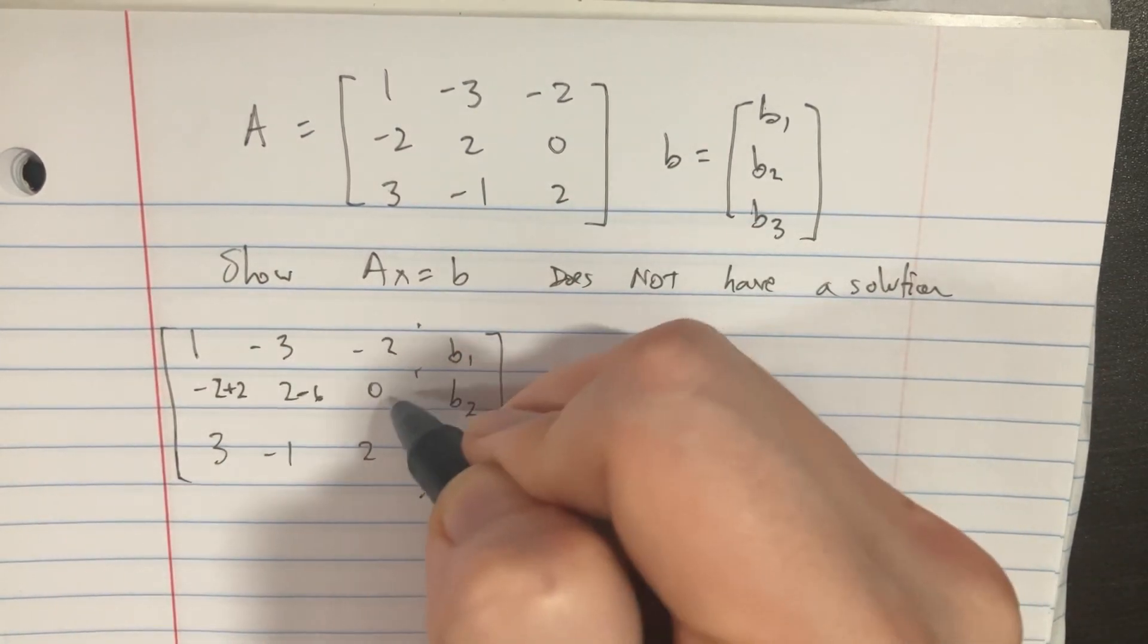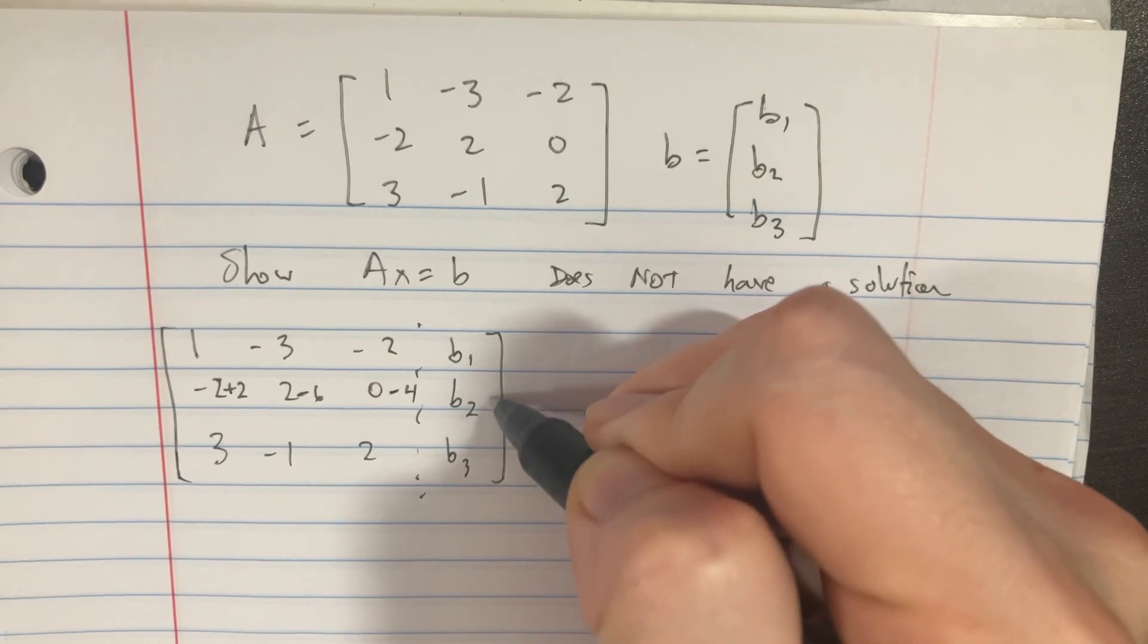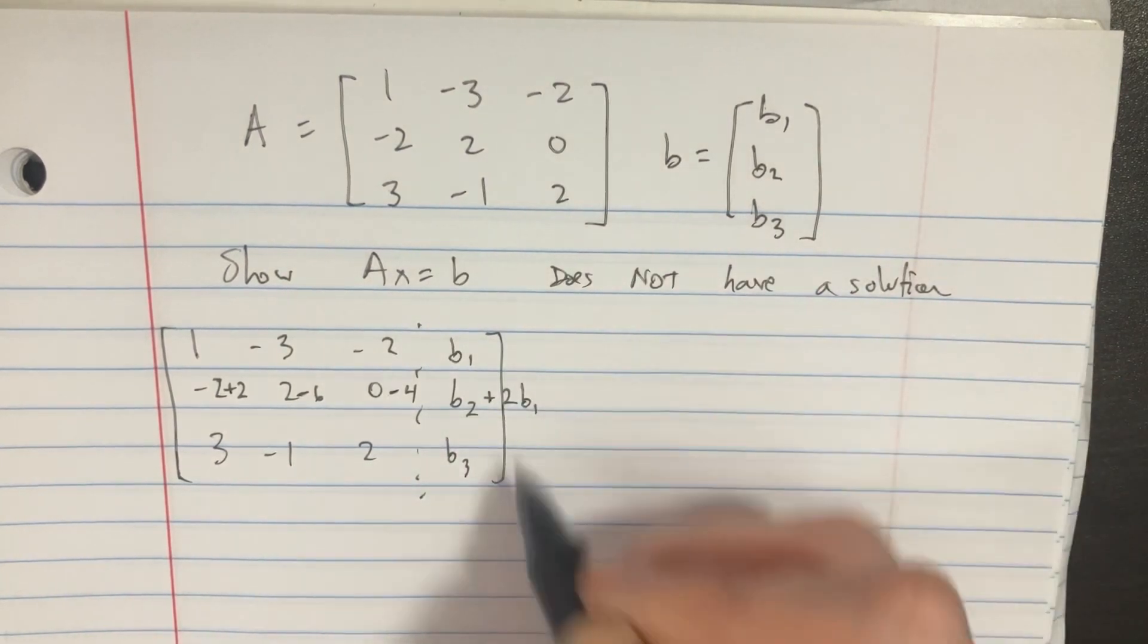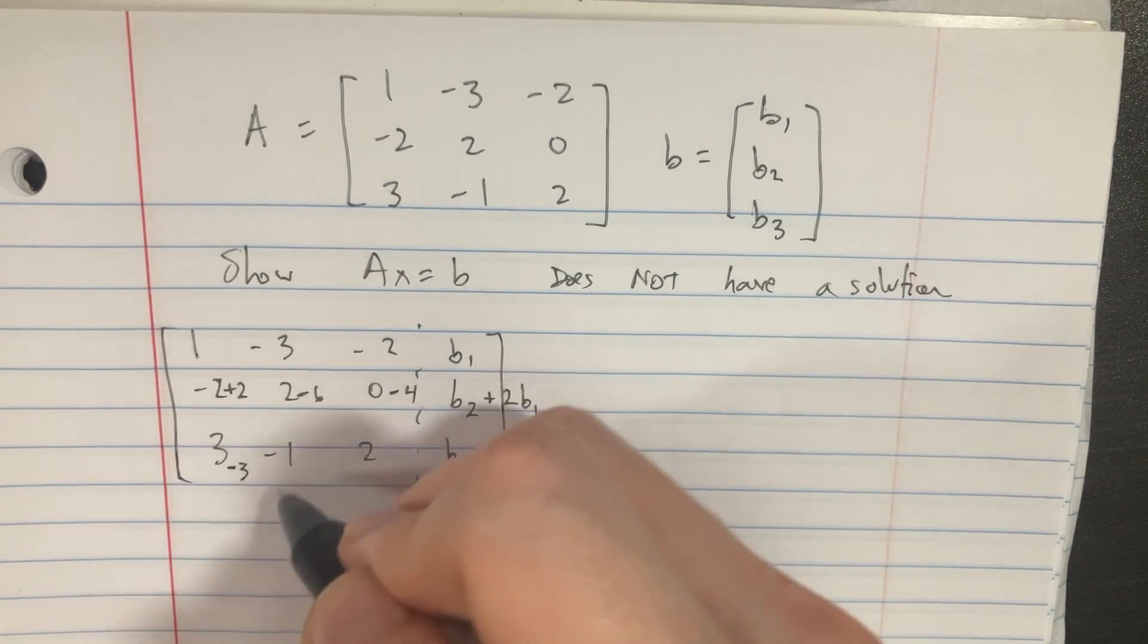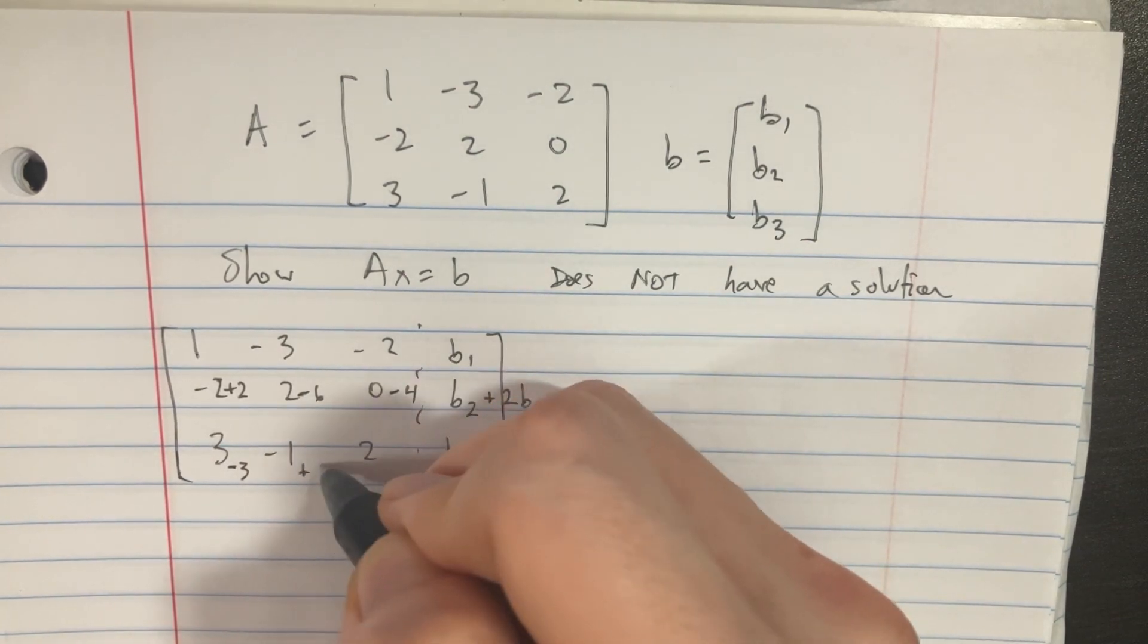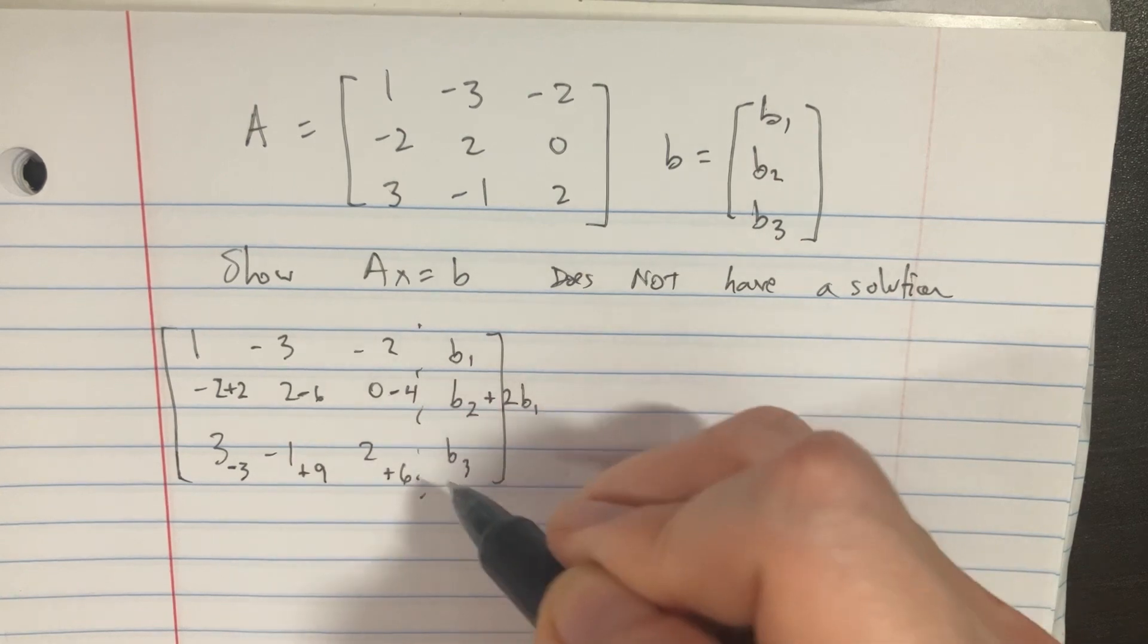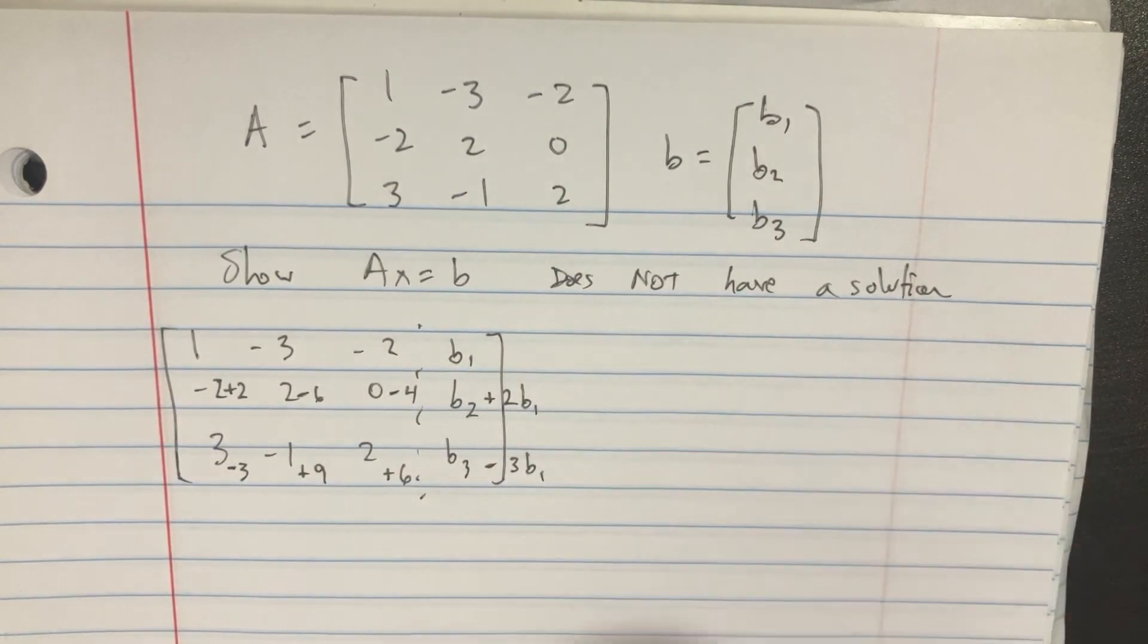So we get minus 6 here, minus 4 there, and then add 2 times the first row. Then the same thing here, but it would be minus 3 times that first row. So plus 9, and then plus 6, and then over here it would be minus 3 times that first row.